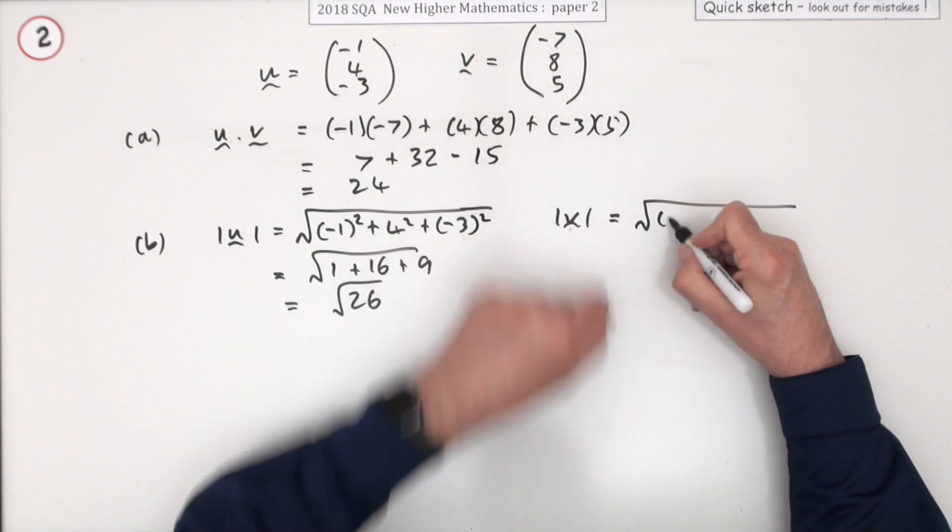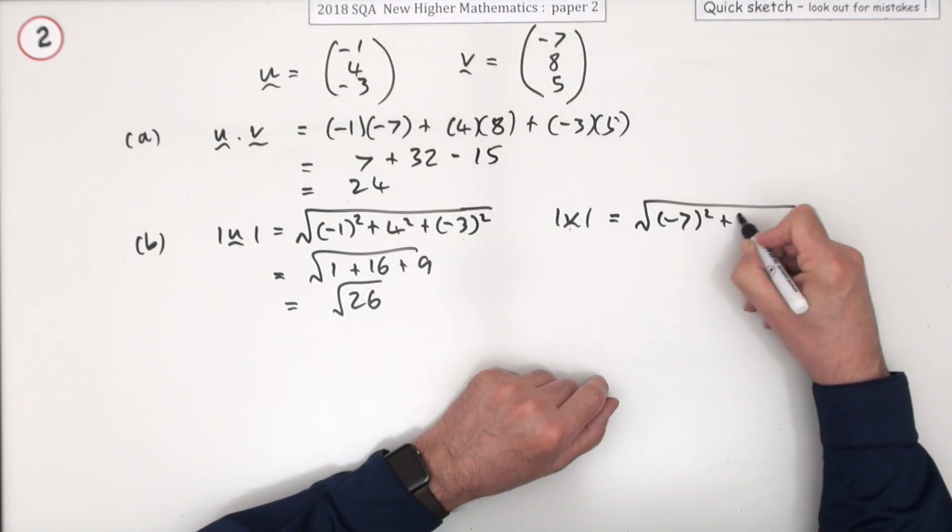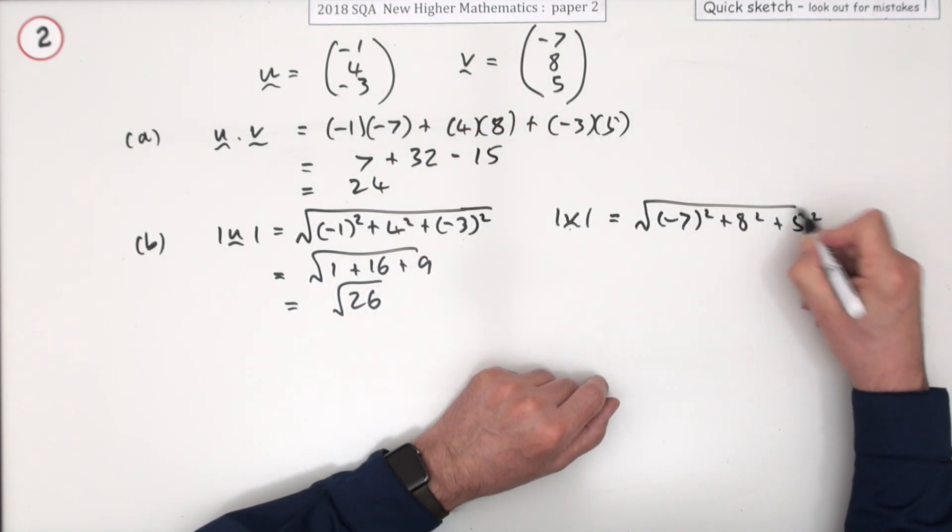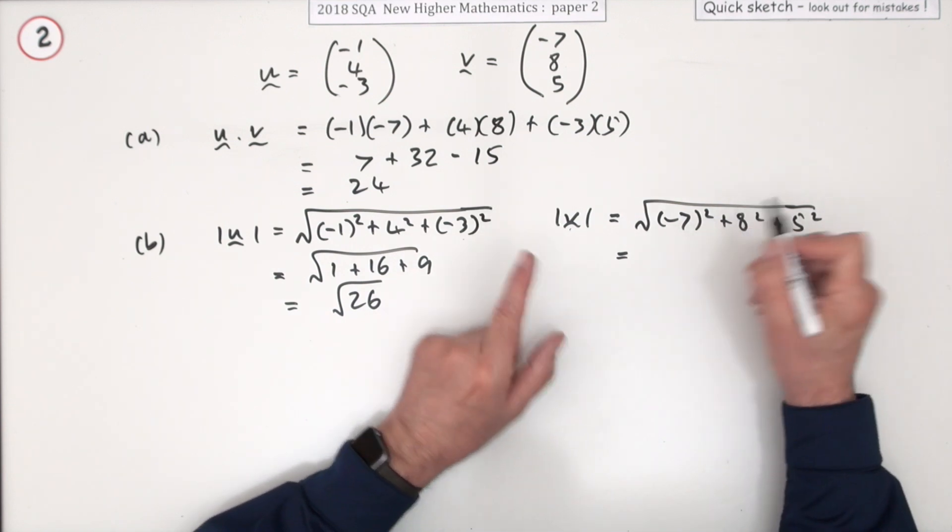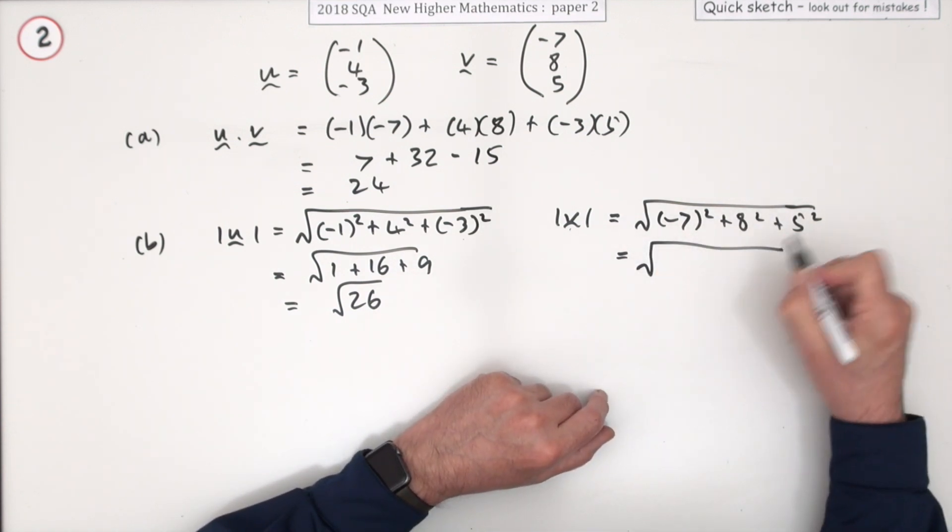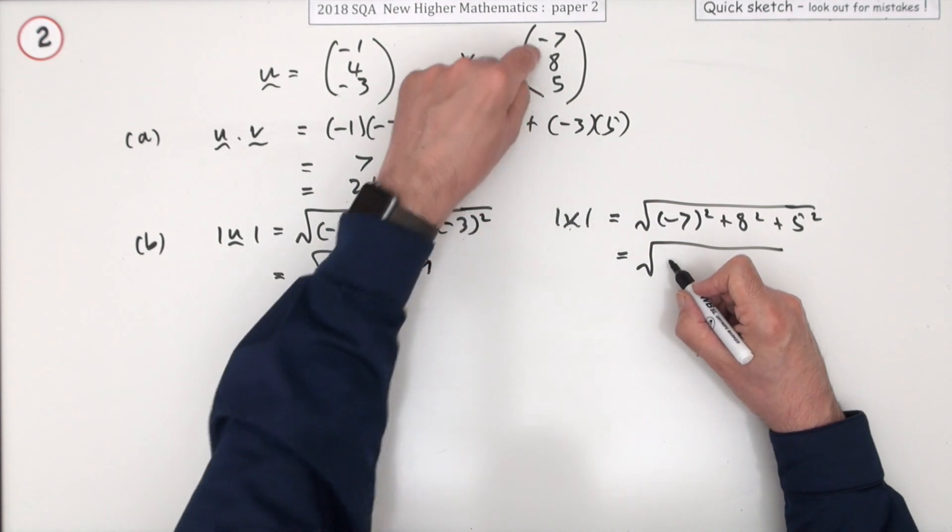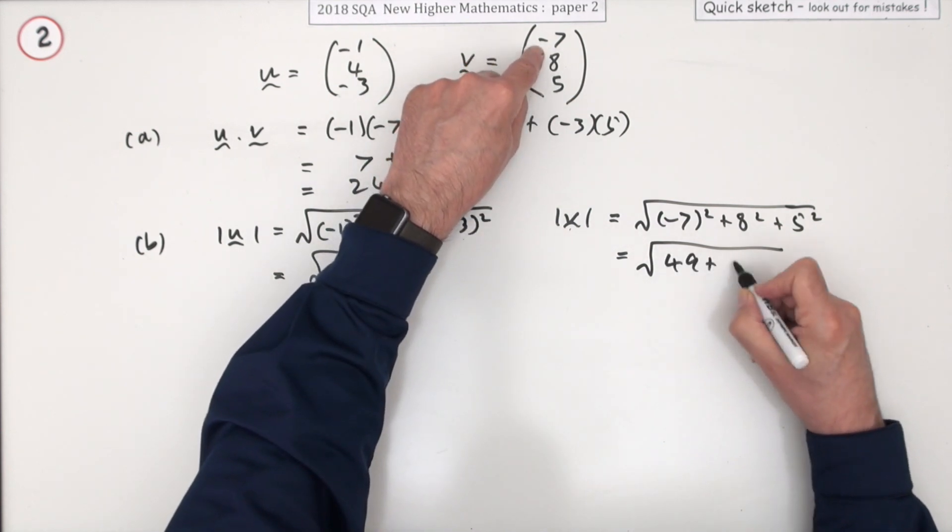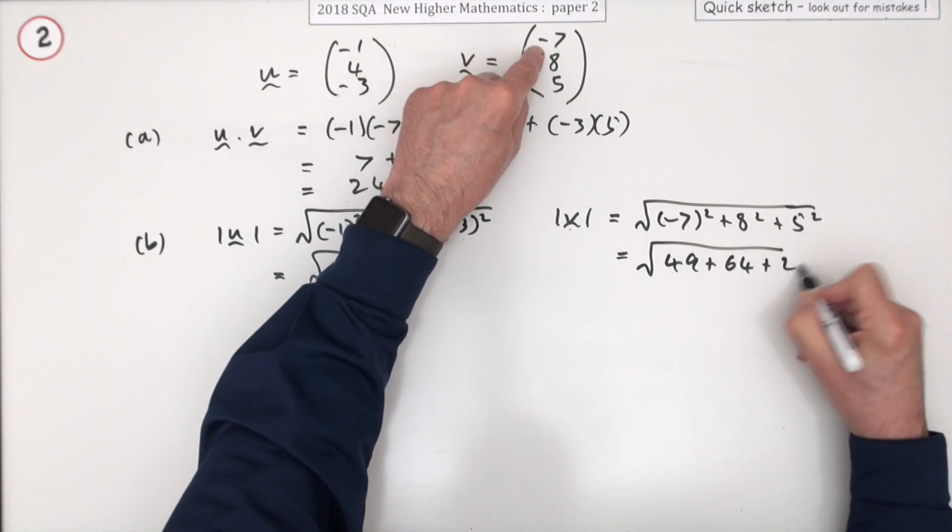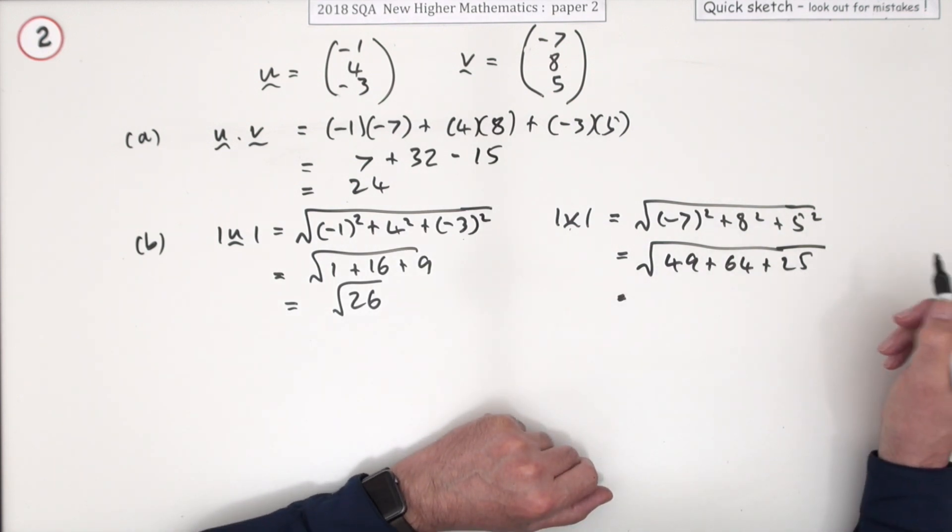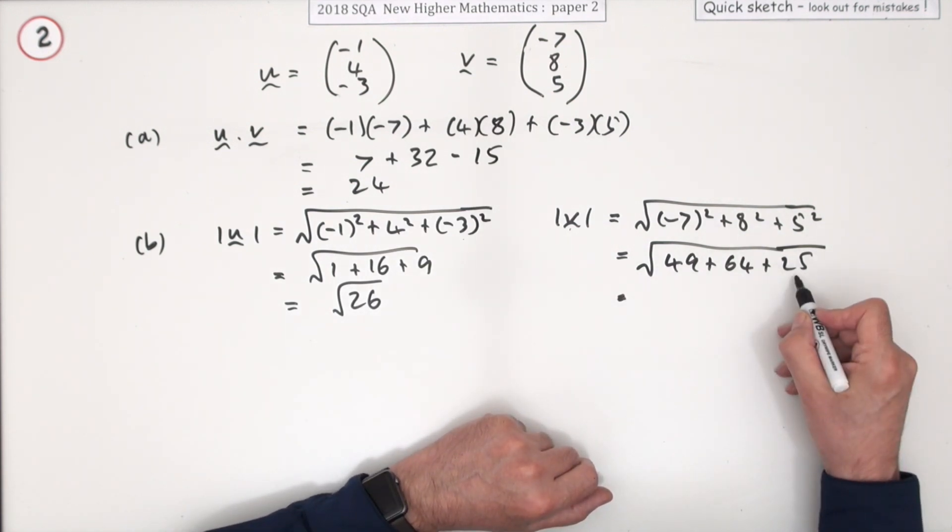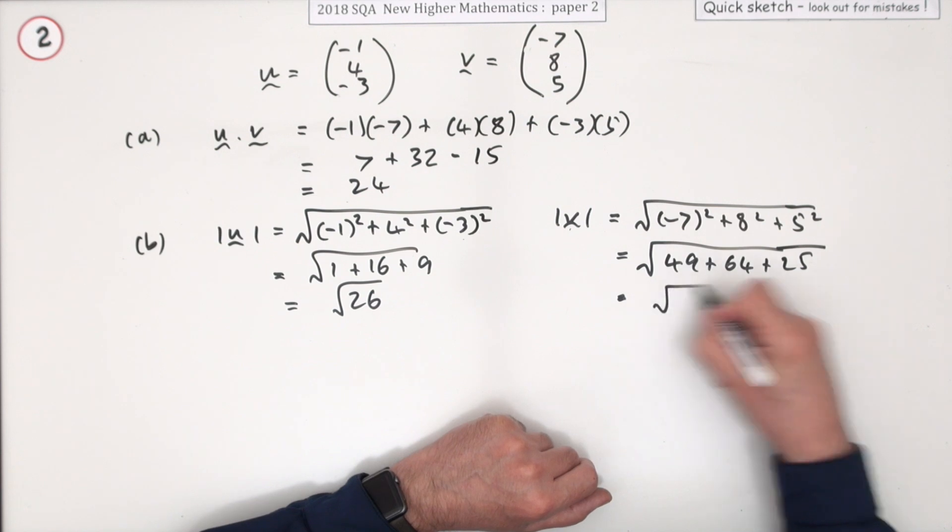Same with v. It's negative seven squared plus eight squared plus five squared. You can just write seven, but negative seven rigorously. I'm pretty sure you can just go straight in with the squares: 49, 64, and 25. That's a bit bigger because that's 89, 129, 138.